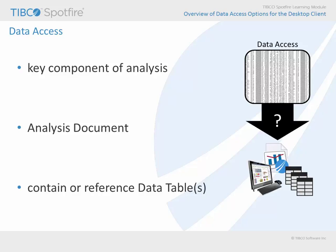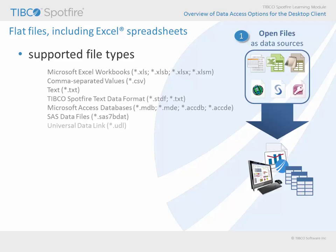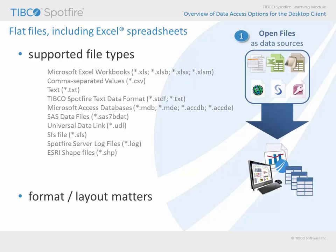The first option we will discuss is to open data from a file. There are a variety of supported file types from which Spotfire can read data, including Excel workbooks. I'll show you in just a minute where you can find this list within the application. Before we perform a demonstration, you should note that there are certain expectations for how the data is formatted and organized within those file types. For example, in Excel, you must indicate which spreadsheet is to be read as a data table, and Spotfire will need to be able to interpret a row of column names and subsequent data rows from within that spreadsheet.